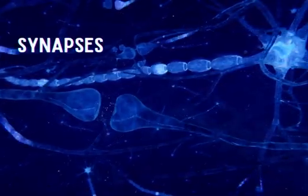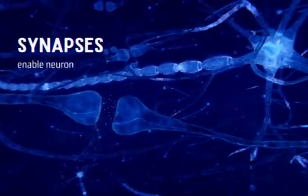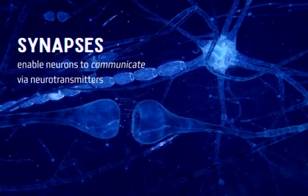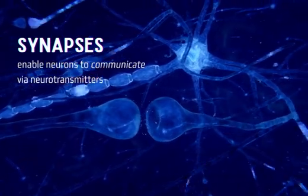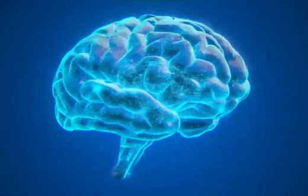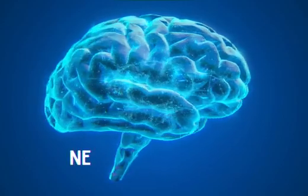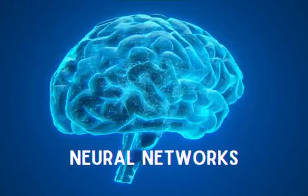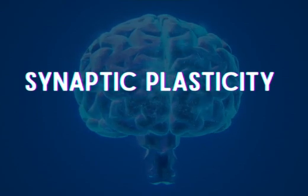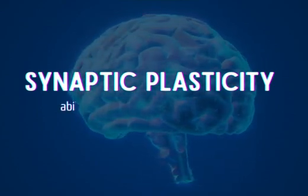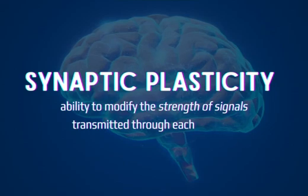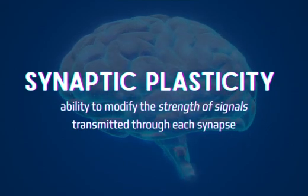Synapses act as a bridge, allowing neurons to communicate with each other through the action of neurotransmitters. Neuroscientists call groups of neurons that form synaptic connections neural networks. An important property of neural networks is a feature called synaptic plasticity, which refers to our brain's ability to modify the strength of signals transmitted through each synapse.